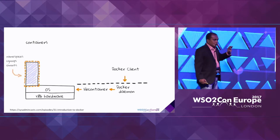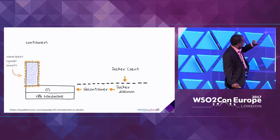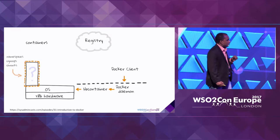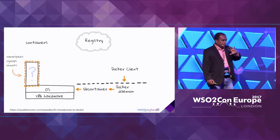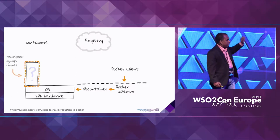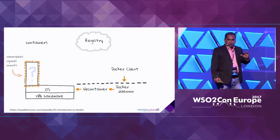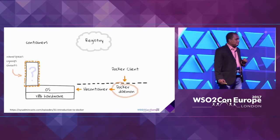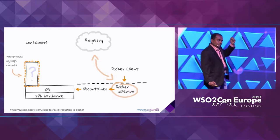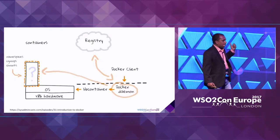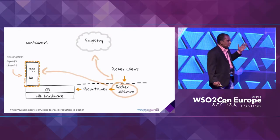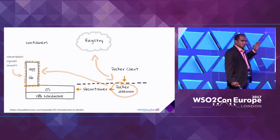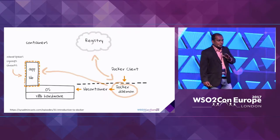The next problem is how we can package our application and run it inside this isolation. To do that, Docker introduced another component called a registry. We can package our application as a Docker image and push it into this registry, which can be public or private. We can then instruct the Docker daemon to take this image, create the isolation, and push our application inside that container. This is a very simple workflow, which is why Docker became very popular in the developer community.